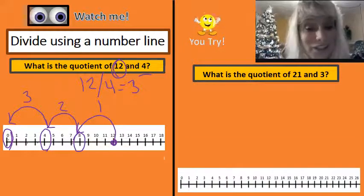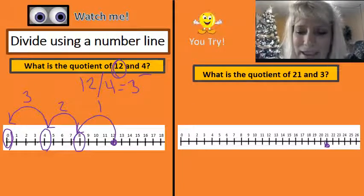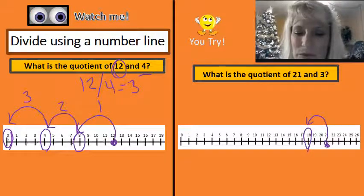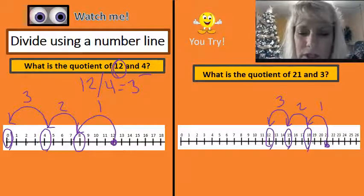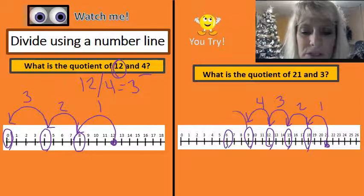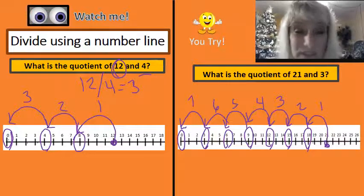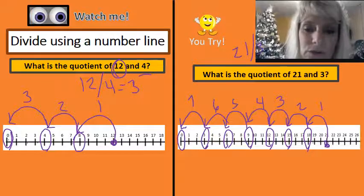Okay, let's see how you did. Here's my number line. I'm going to start at 21, and I am going to count back by threes. One, two, three — that puts me right here, that's one jump. Then jump two, jump three, jump four, jump five, jump six, and jump seven — it got all the way back to zero. And I made seven jumps in order to do that. What that tells me is 21 divided by three equals seven.